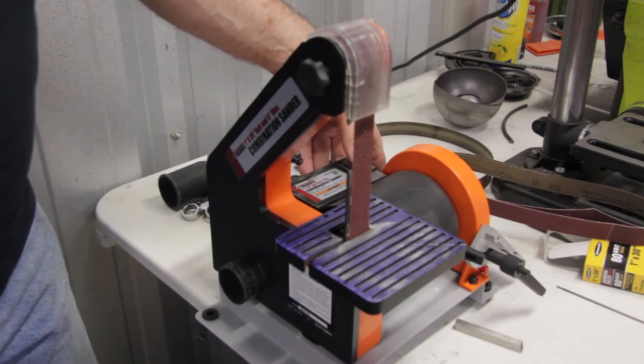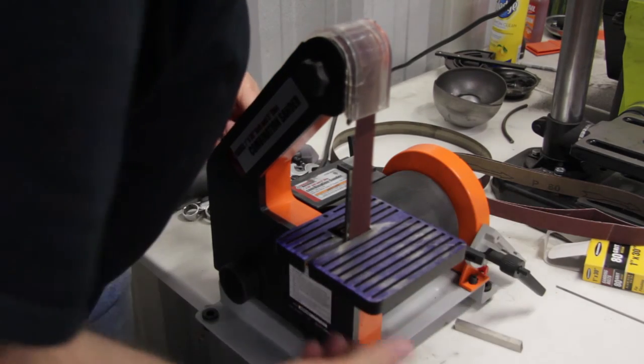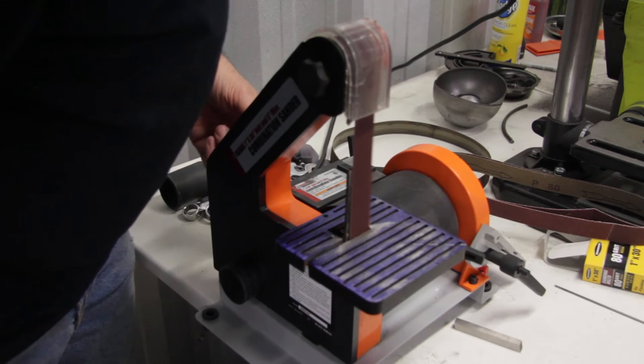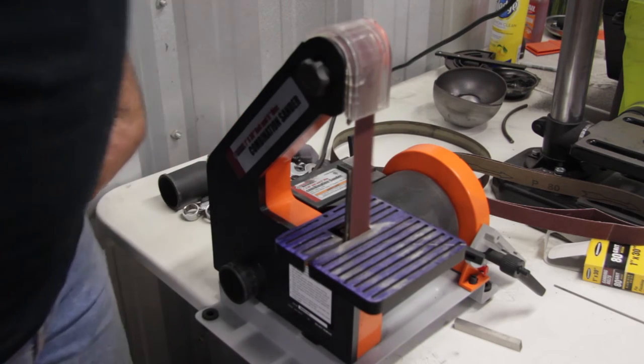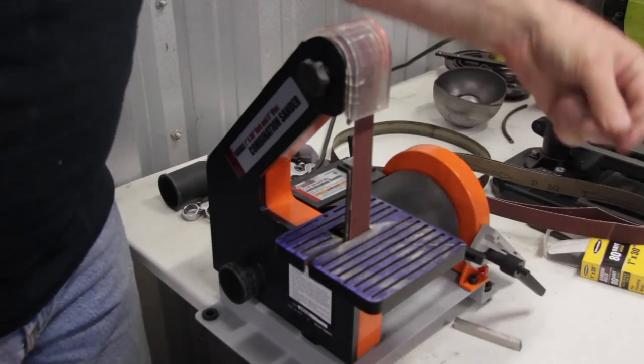Once we get the cover back on and tightened up I can then turn on the sander and I can do the belt adjuster to make sure my belt is centered. It doesn't work that well. You only have a teeny bit of movement but you can do that.